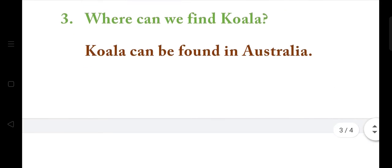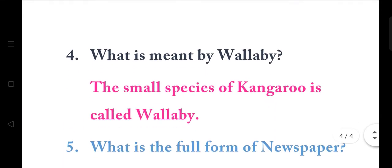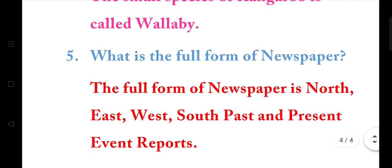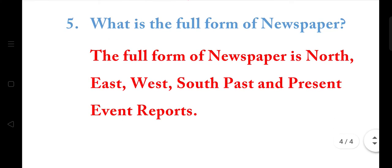23. Where can we find a koala? Koala can be found in Australia. 24. What is meant by Wallaby? The small species of kangaroo is called Wallaby. 25. What is the full form of newspaper? The full form of NEWSPAPER is North, East, West, South, Past and Present Event Reports.